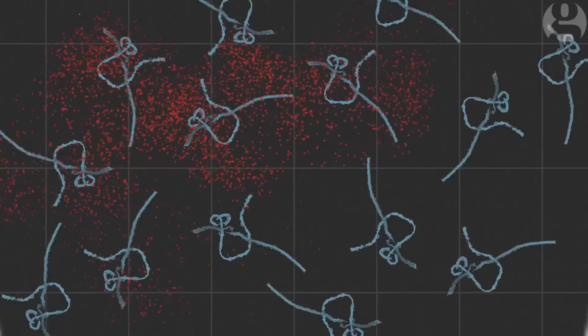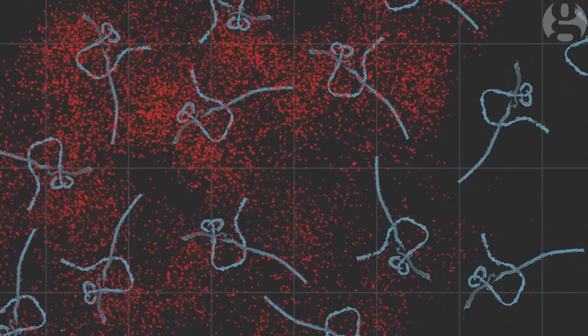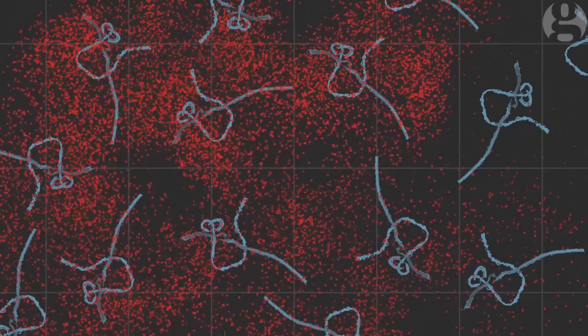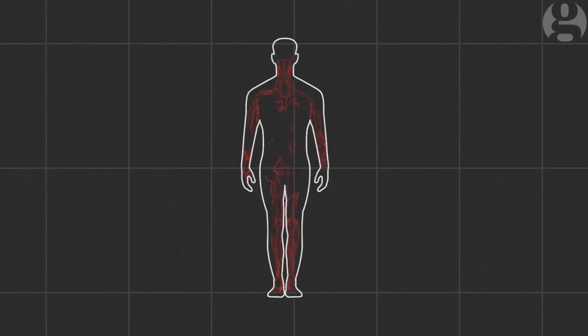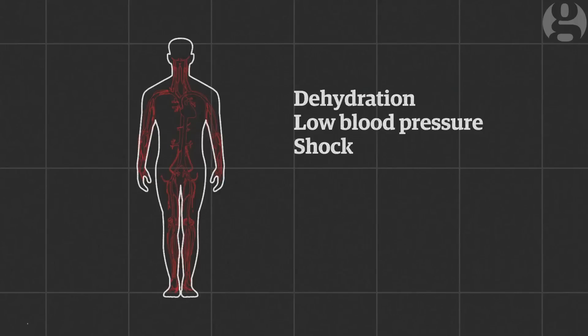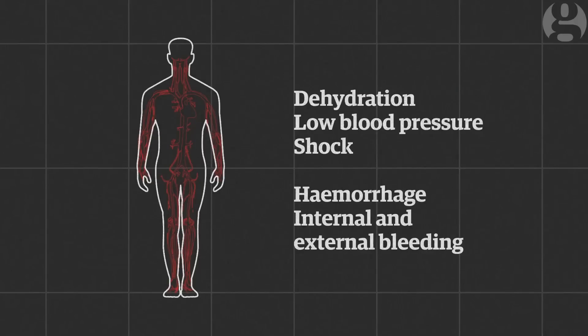The most deadly aspect of Ebola infection is a dramatic overreaction of the immune system. This cytokine storm is a massive mobilisation of the body's defences to wipe out the virus — and it's this that often kills people. The linings of the blood vessels become more permeable, leading to dehydration, low blood pressure and shock. In some cases, people haemorrhage and suffer internal and external bleeding. The cause of death is multiple organ failure.